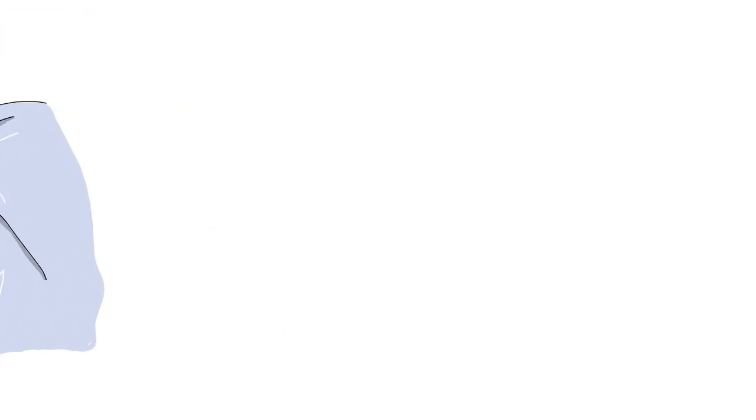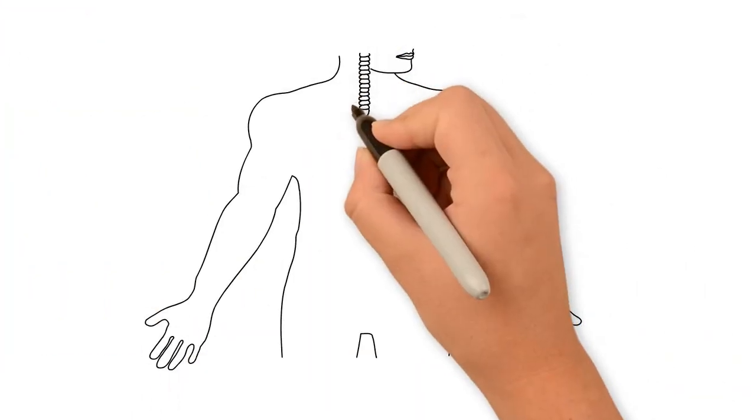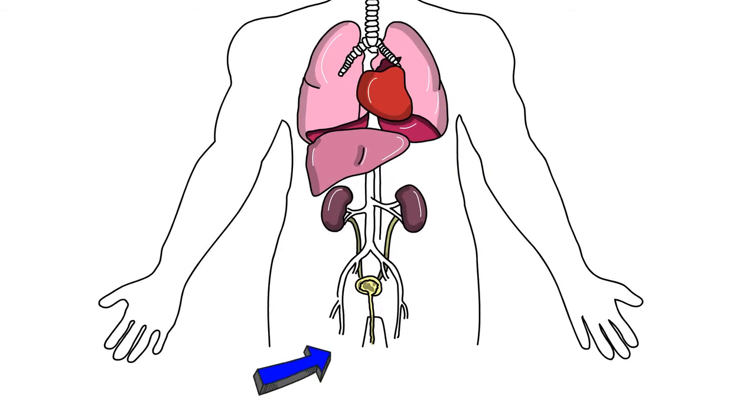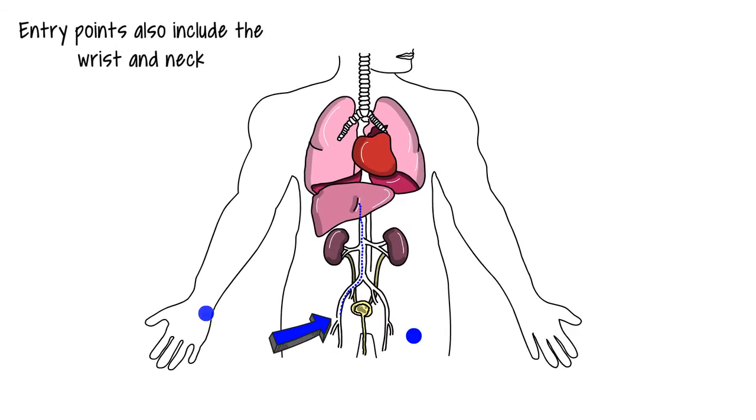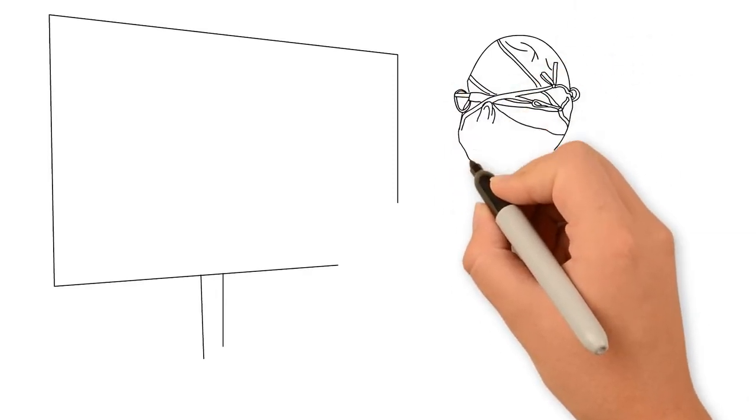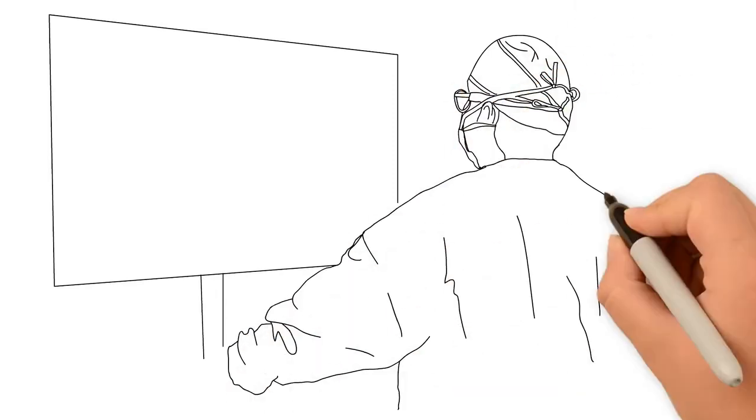Through a tiny hole no bigger than a few millimeters, interventional radiologists can reach nearly every organ in the body to perform procedures. There's no need for large surgical incisions. Doctors use live medical imaging, such as x-rays or ultrasounds, to guide their instruments inside the body.